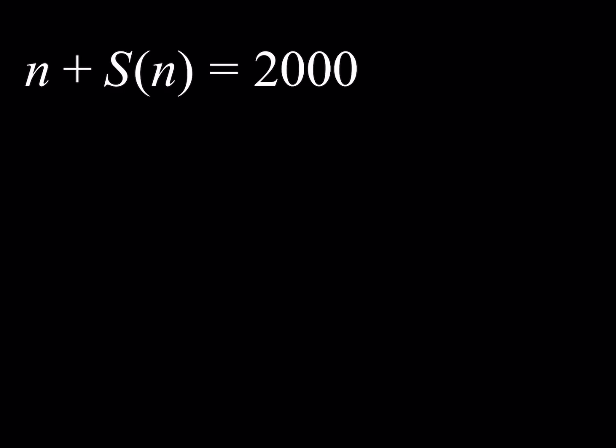Hello everyone. In this video, we're going to be solving a number theory problem involving the sum of the digits of an integer n. S of n, or you can call that S n, represents the sum of the digits of n, and we're trying to solve for n here. n plus S of n is equal to 2000, and we're going to be looking for the values of n.